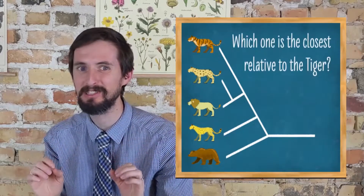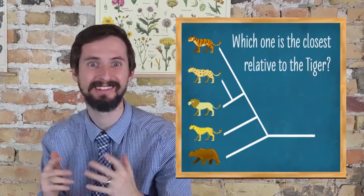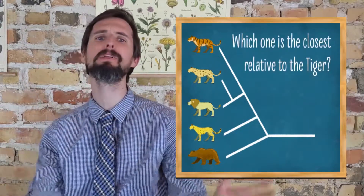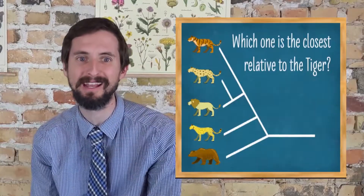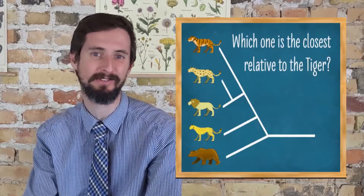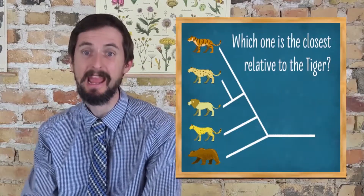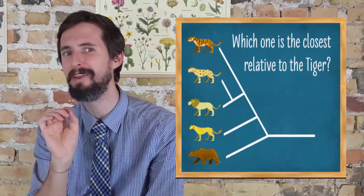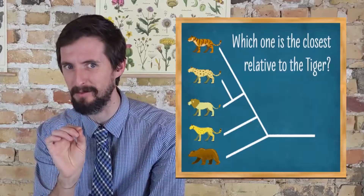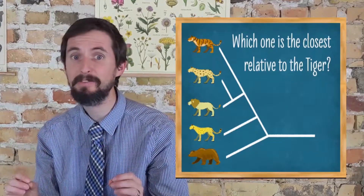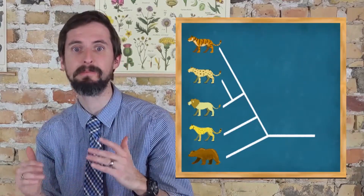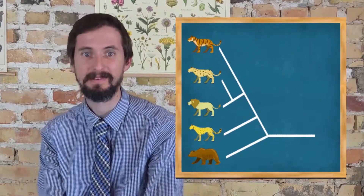Which one is the closest relative to the tiger? There are a million wrong ways to interpret a phylogenetic tree, and only one is the right way. Even phylogenetics graduate students often make mistakes with this.